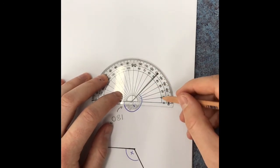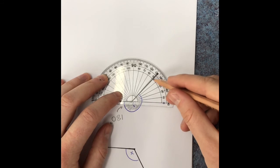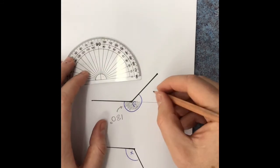So line up, 10, 20, 30, 40, just under 50, so that's 49 degrees.